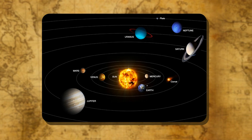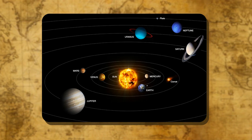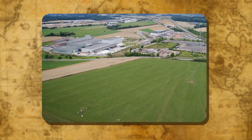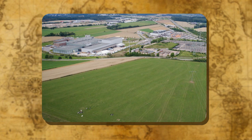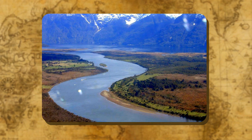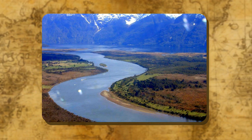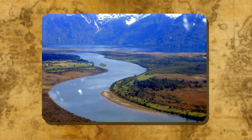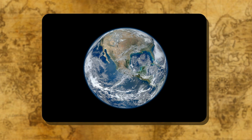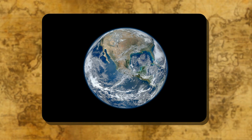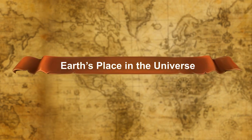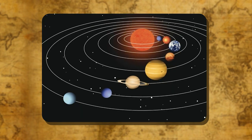Planet Earth revolves around the sun, completing one revolution in 365 and a quarter days. In size it ranks fifth, after Jupiter, Saturn, Uranus, and Neptune. The presence of land, water, and air gives Earth a unique position in the solar system. Water occupies 71% of the total surface of the Earth. When astronauts first saw the Earth from outer space, it looked blue in color due to the water present all over it — so the Earth is often called the blue planet.